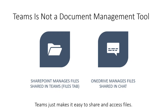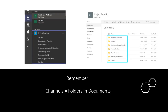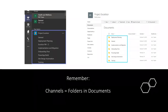Teams really just makes it easy to share and access files. To the business user, it abstracts them from having to care whether it's going into SharePoint or OneDrive — you're just putting files into Teams, and that's mostly what they need to know. Also remember that channels are ways of segmenting your team into different pieces that allow you to have conversations and specific files and apps around a topic, a project, or really anything.